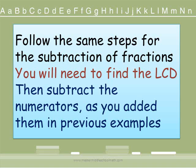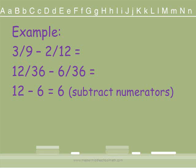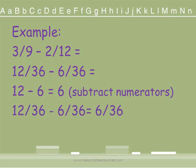You will follow the same steps for the subtraction of fractions as you do for addition. Here is an example: 3 ninths minus 2 twelfths. We need to find a common denominator — we are going to use 36. We convert 9 into 36 and do the same to the numerator; we convert 12 into 36 and change that numerator as well. Our new fractions are 12 over 36 minus 6 over 36. Since we have common denominators we subtract our numerators: 12 minus 6 is 6, giving us 6 over 36. We reduce: 6 divides into itself once and into 36 six times, giving us our final reduced answer.